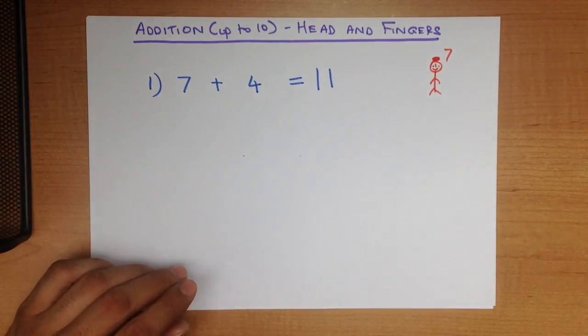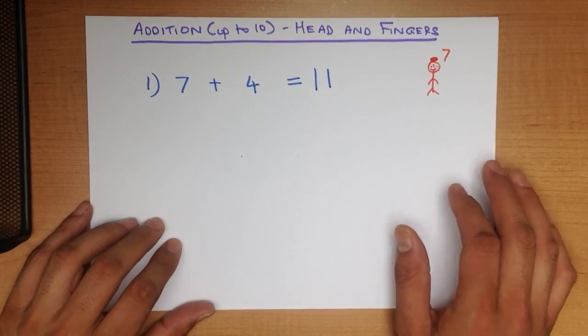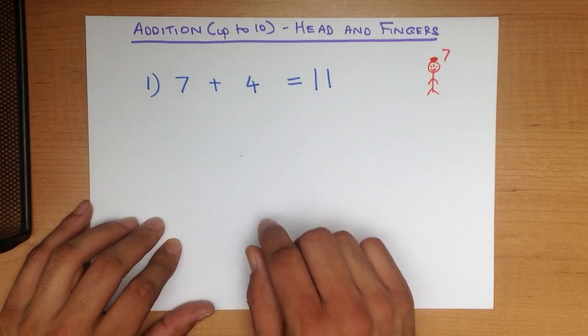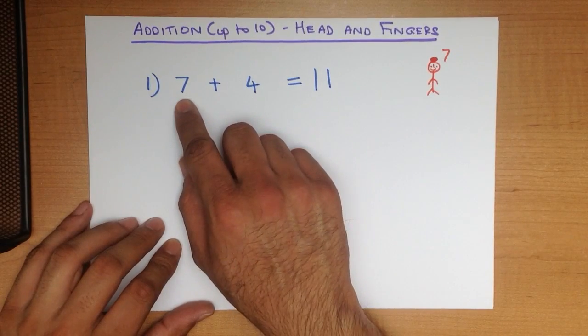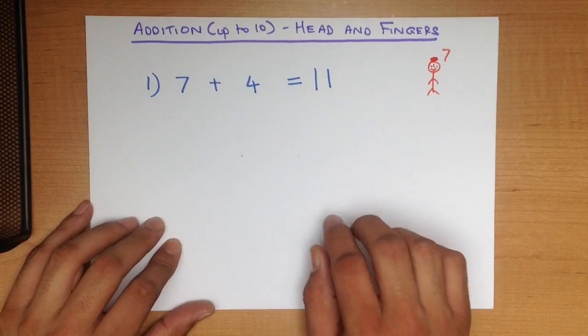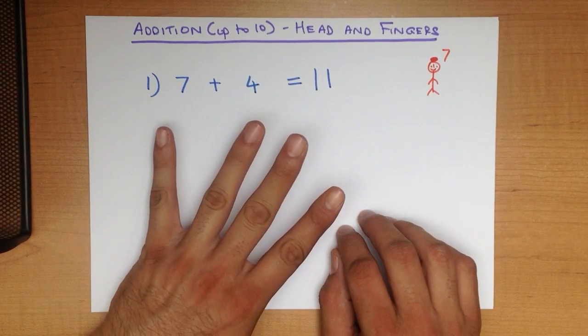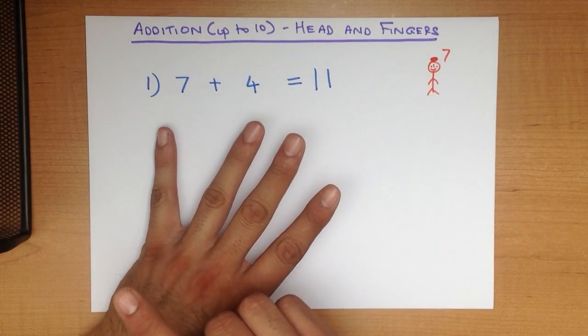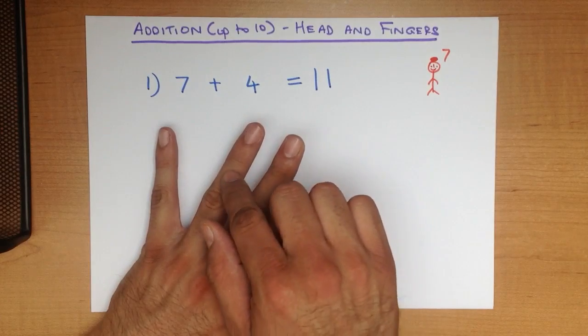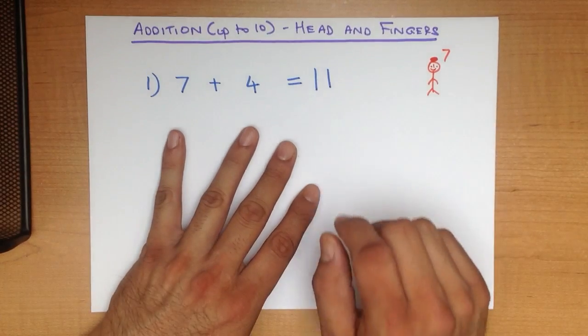Shall we do that one more time just to make sure we understand it? 7 plus 4. There is 7 on my head and there is 4 in my hand. 7, 8, 9, 10, 11. That is our answer.